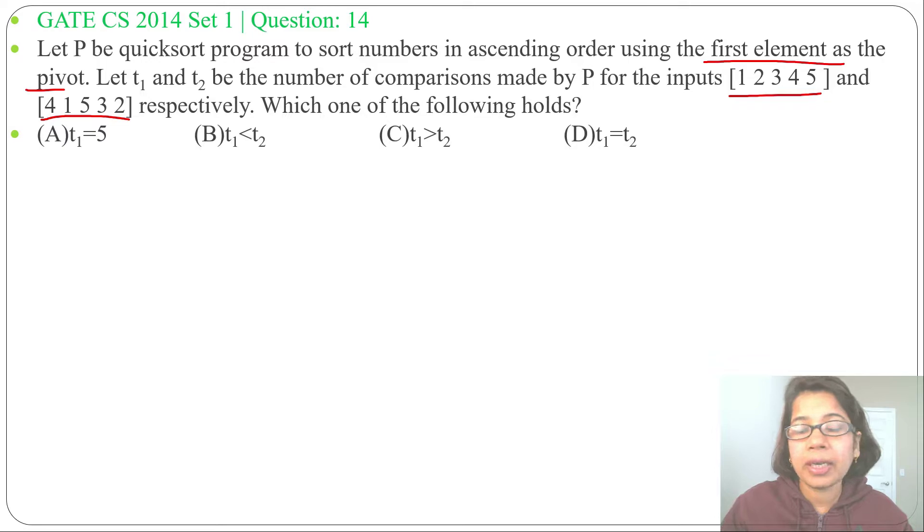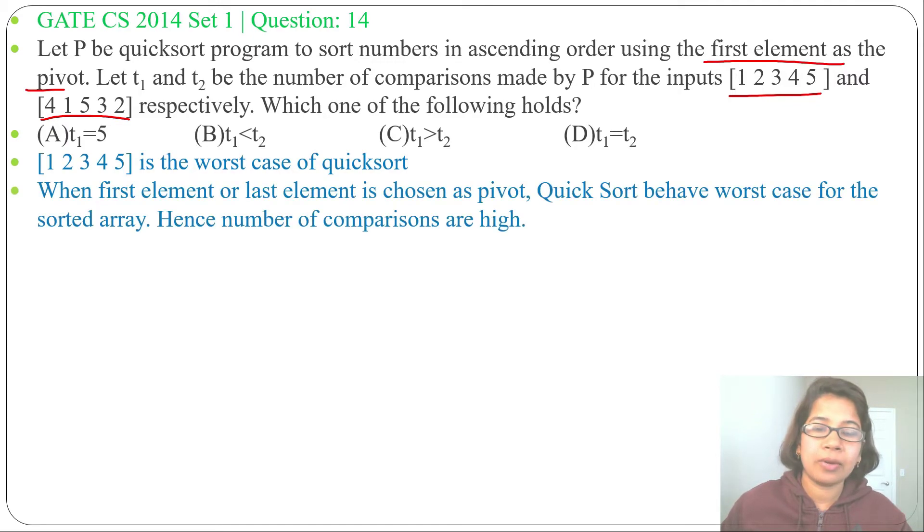[1 2 3 4 5] is already in ascending order. We know for quicksort, if one list is already in ascending order and we are choosing first element or last element as pivot, then this is the worst case scenario. In worst case there will be more comparisons.